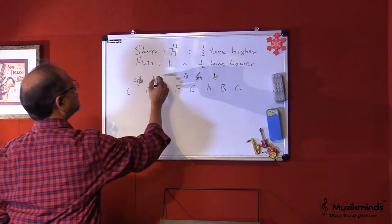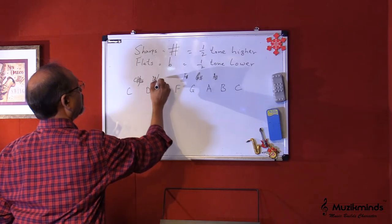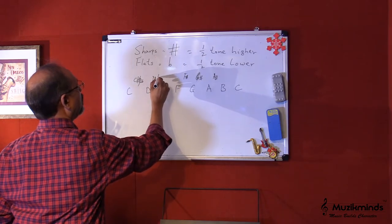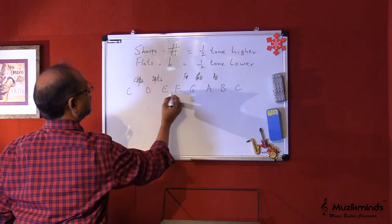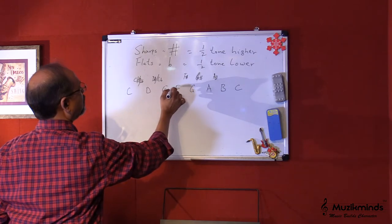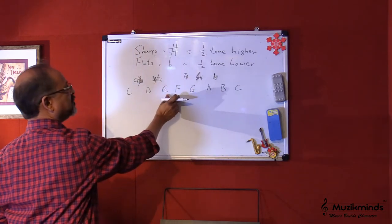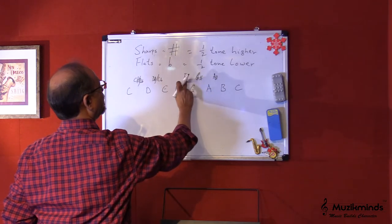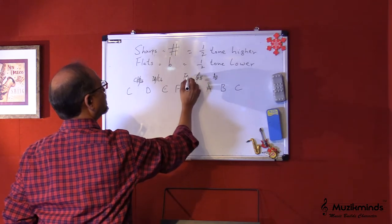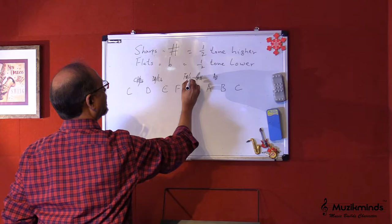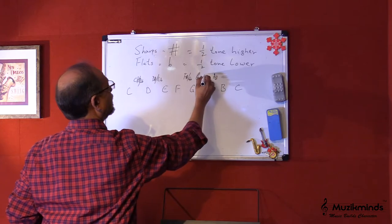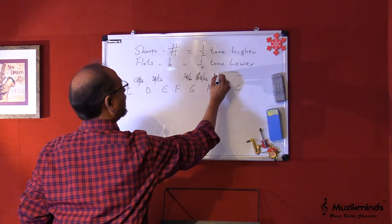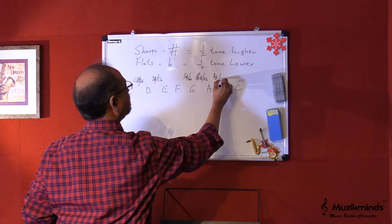Similarly, we have a D sharp or we can call it an E flat. As there is no half tone between E and F, it's a straight jump from E to F. From F we have F sharp, which is also a G flat. This is also an A flat and this is also a B flat.